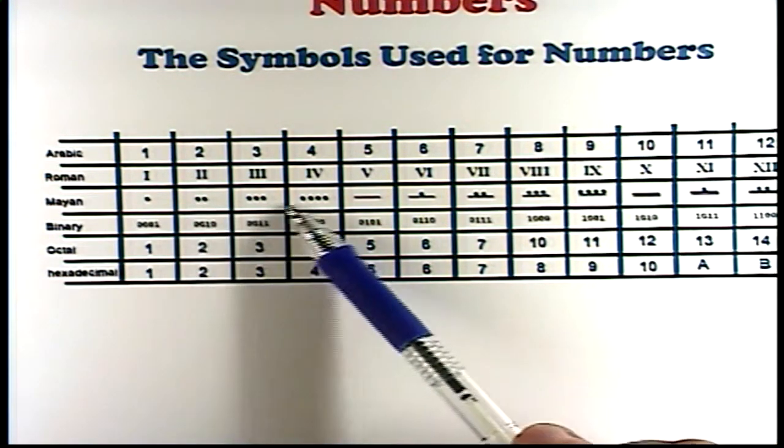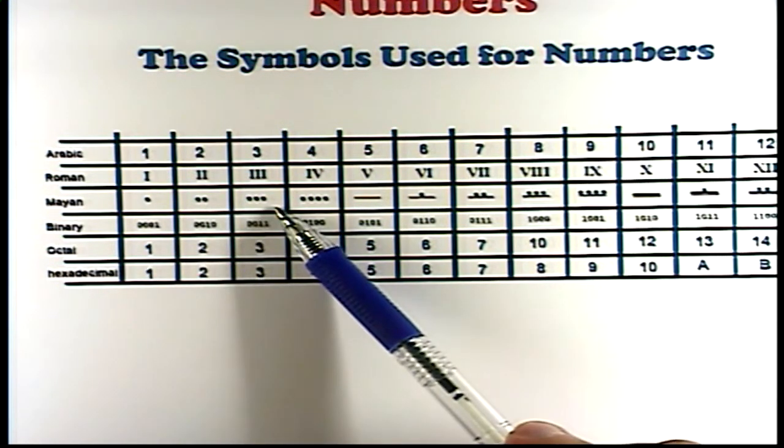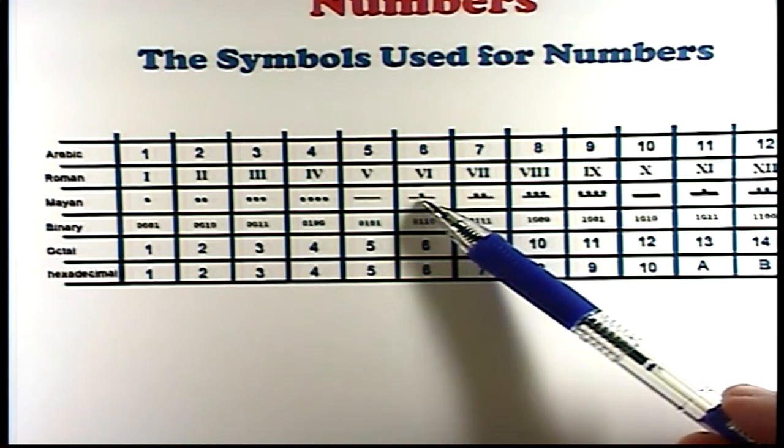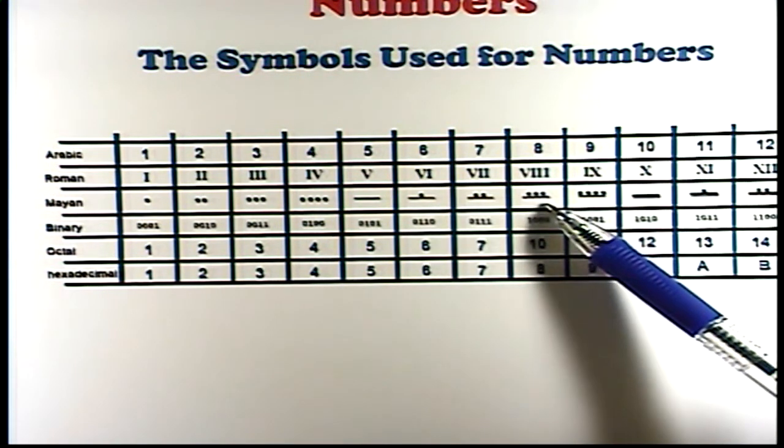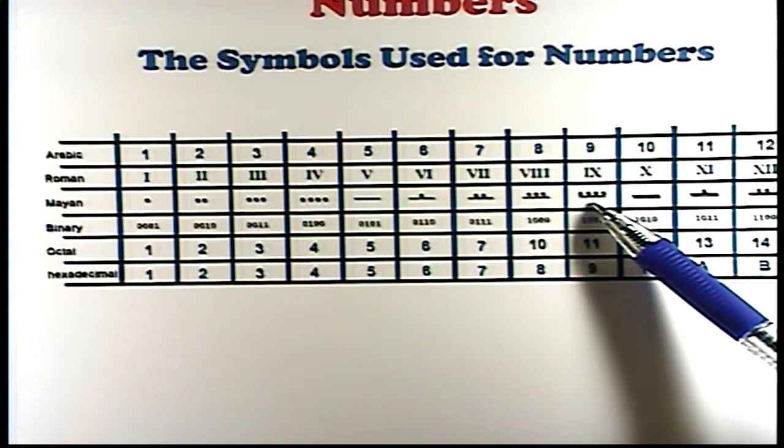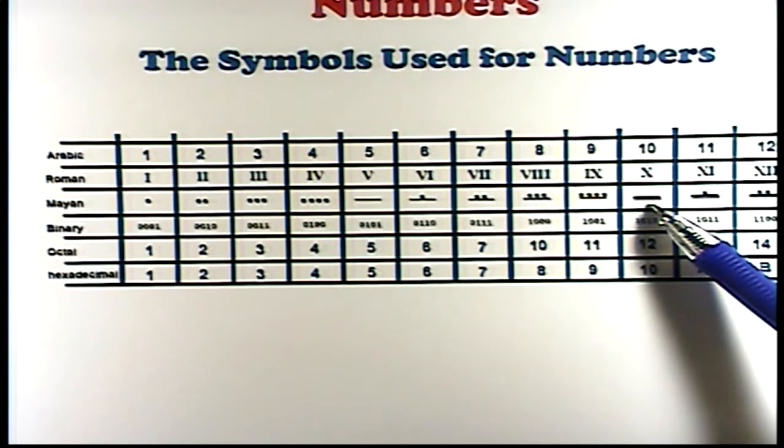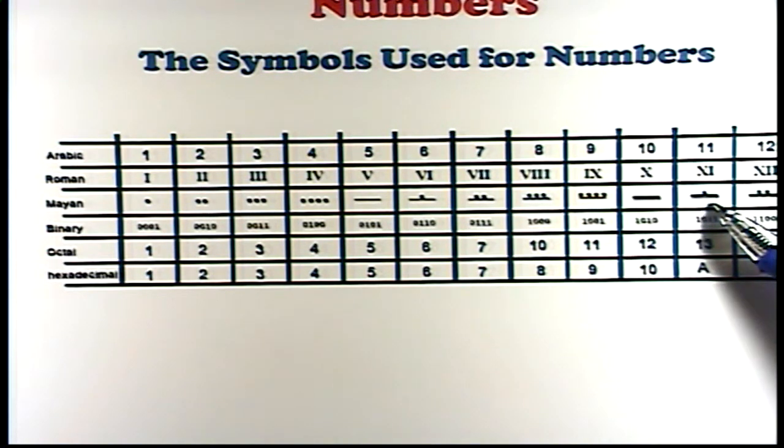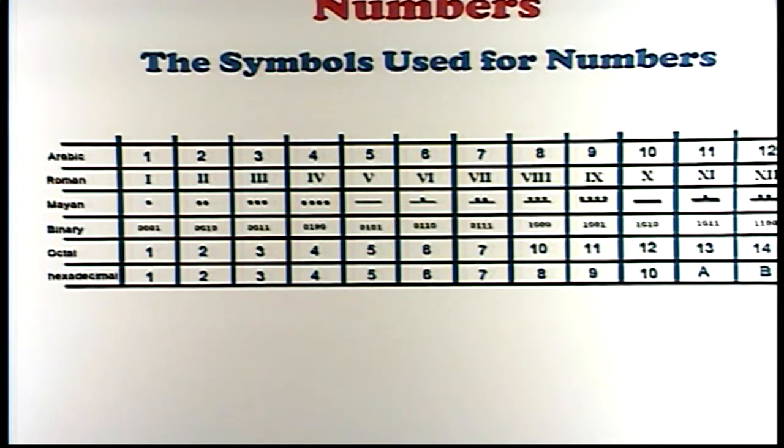In Mayan, it's even, it's a little more interesting. One dot means one, two dots means two, three dots means three, four dots means four, a line means five, a line with a dot over it means six, a line with two dots over it means seven, a line with three dots over it means eight, a line with four dots over it means nine, and then two lines, one above the other, represents, or means ten. And then two lines with the dot over the top means eleven. And two lines with two dots means twelve. So you can see how this progression would work up to count the larger numbers.